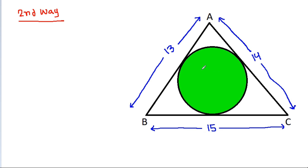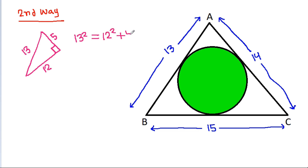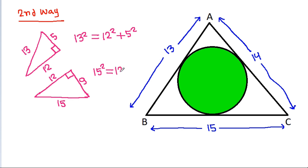And now the second way. If we notice, we know that 5, 12, and 13 form a right angle triangle because 13 squared equals 12 squared plus 5 squared. And also, 9, 12, and 15 form a right angle triangle because 15 squared equals 12 squared plus 9 squared. And 5 plus 9 equals 14.